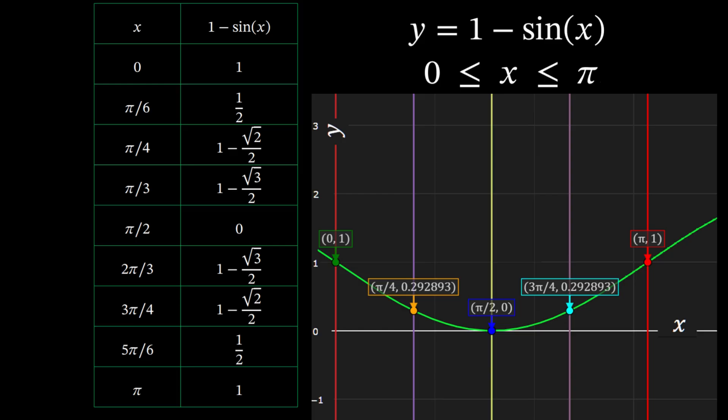Plotting it by hand helps you understand the curve deeply. Let's check a few points. At x equals zero, y equals one. At x equals pi over six, y equals one half. At x equals pi over four, y equals one minus square root of two over two.